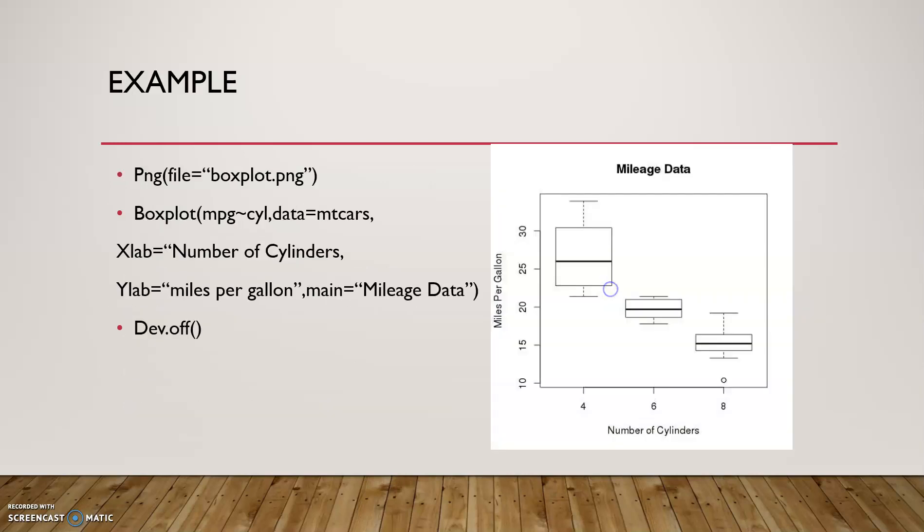main is used to give the title of the graph. This is the example of a boxplot. Boxplot name is boxplot.png. Boxplot of miles per gallon vs cylinder. data equal to mtcars. xlab is number of cylinders. ylab is miles per gallon. main equal to mileage data. dev.off to save the file.